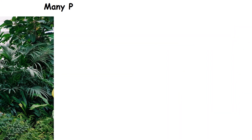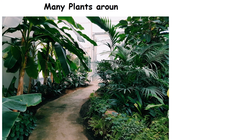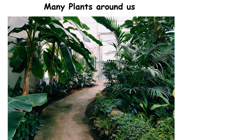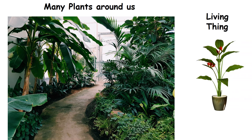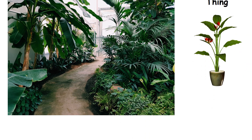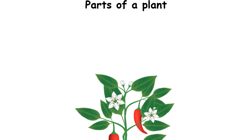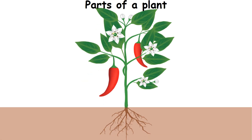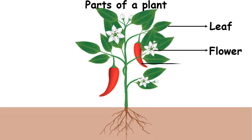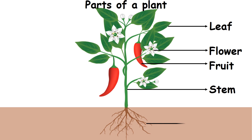We see many plants around us. Plants are living things. Parts of the plant are leaf, flower, fruit, stem and root.